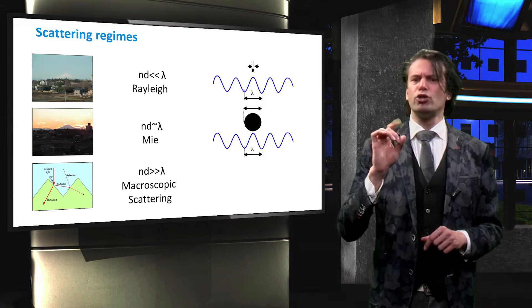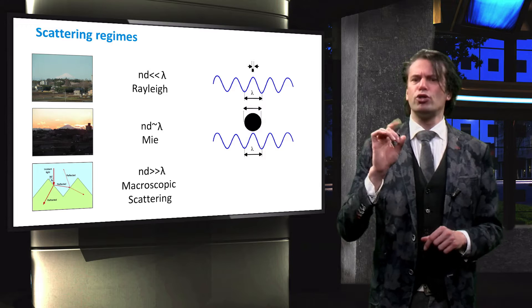We will first look into Rayleigh scattering. The Schoen equation is used to describe the light intensity at a certain angle after a light-particle interaction. The angular intensity distribution depends on the refractive indices of the particle and surrounding medium, on the wavelength of the light, on the particle diameter and the distance to the particle.